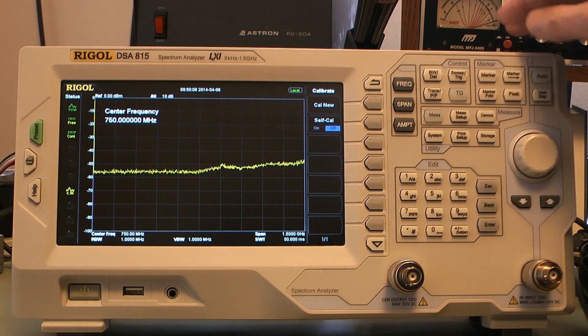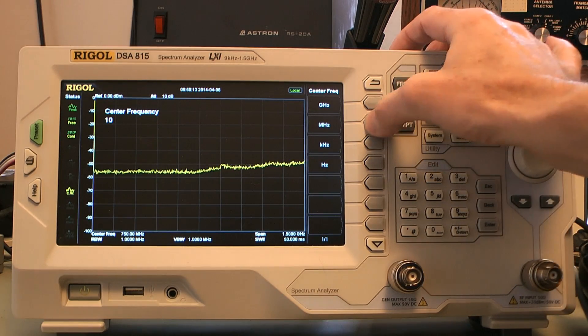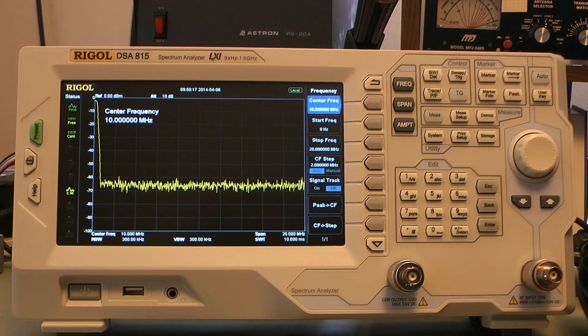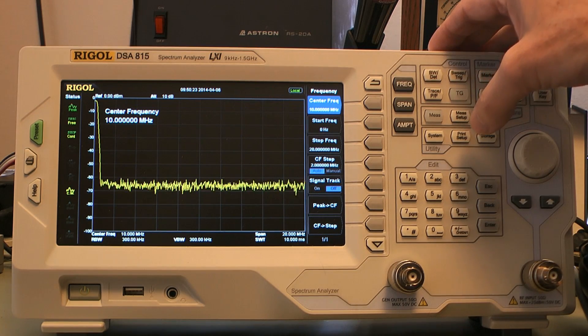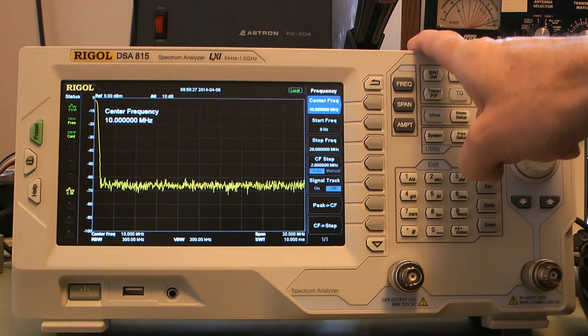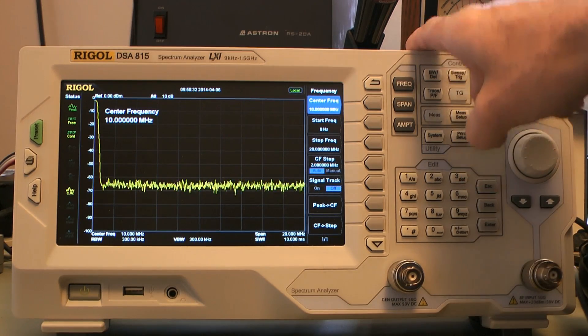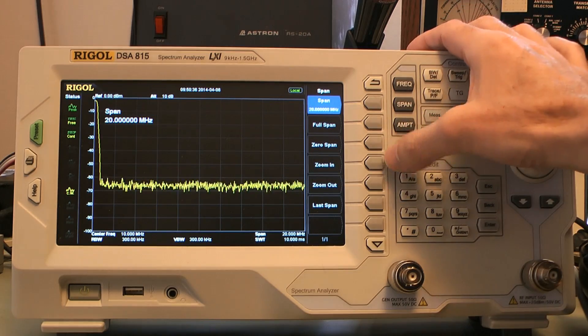Next thing I'm going to do is set my frequency to 10 megahertz center frequency. I'm going to set my span to either 1k or 100 hertz, depending on the minimum resolution bandwidth that I can set. I've done the hack on this one. I can get the 10 hertz resolution bandwidth, so I'm going to set my span to 100 hertz.